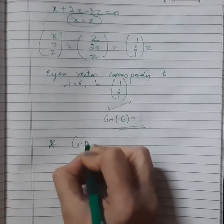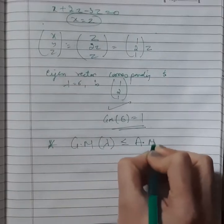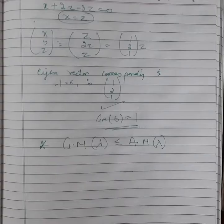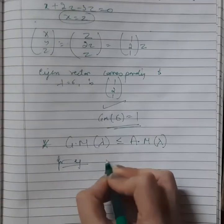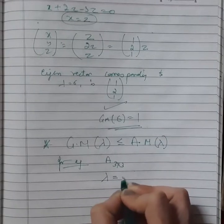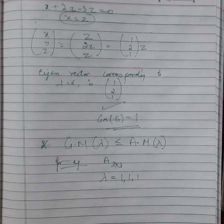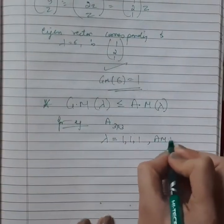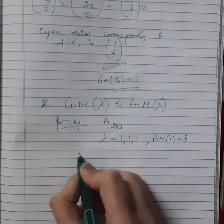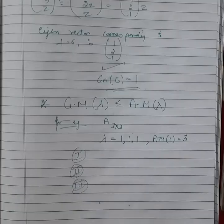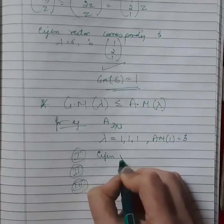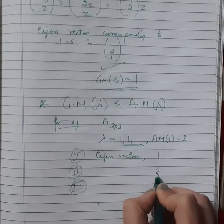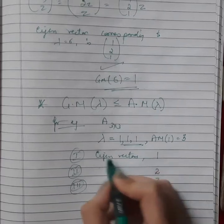There is one important result: geometric multiplicity cannot exceed algebraic multiplicity. For example, if a matrix of order 3 has eigenvalues 1, 1, and 1, the algebraic multiplicity of 1 is 3. The geometric multiplicity — the number of linearly independent eigenvectors corresponding to lambda equals 1 — can be 1, 2, or 3, depending on the matrix, but it cannot exceed 3.